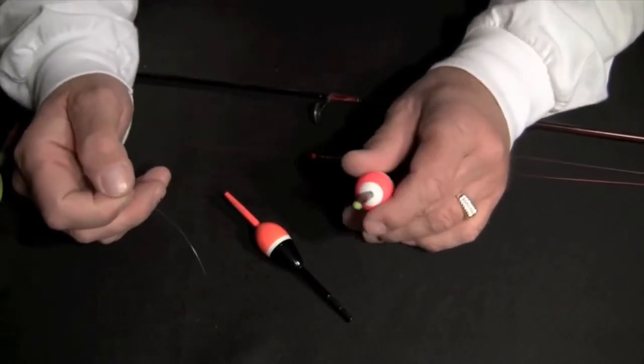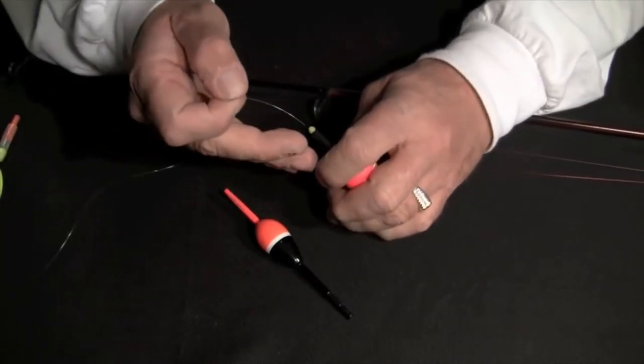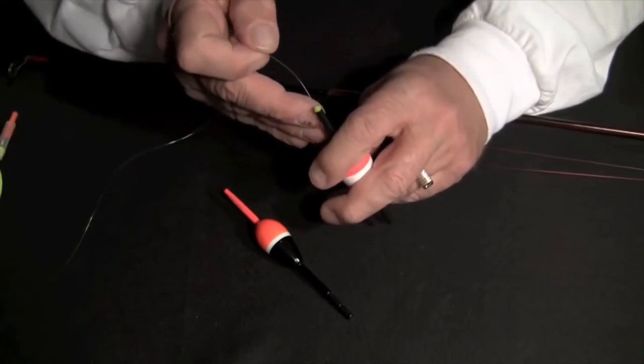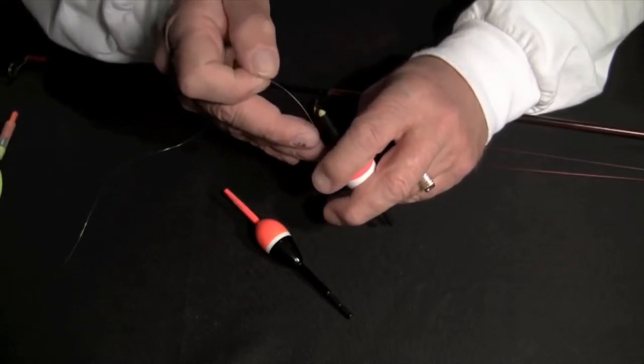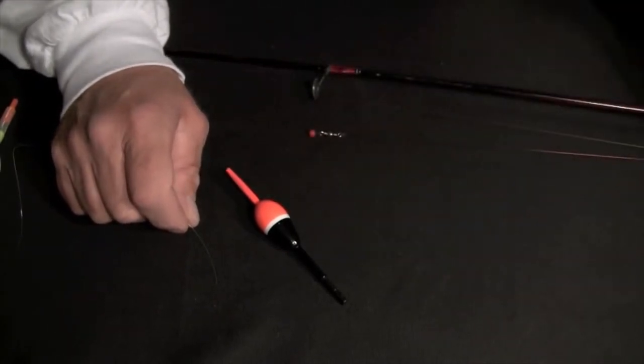With this traditional type slip bobber, you always had to cut your line, you have to take and try and feed it through the little hole. If you're like me, you have a real tough time doing that. Sometimes it just takes forever, so we designed something here at Wing-It Fishing Products that's going to work a whole lot better.